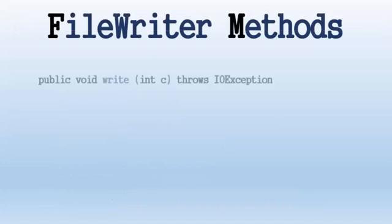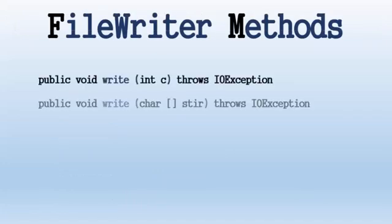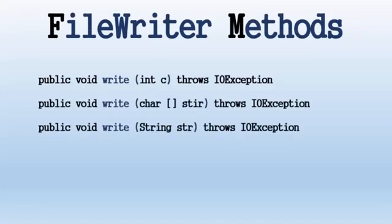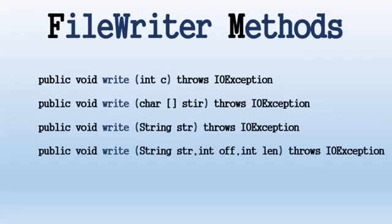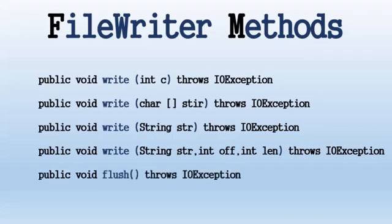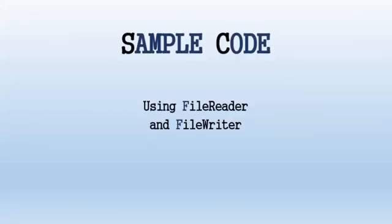FileWriter methods: this class has four write methods with different parameters. The first write method takes an int. The second takes an array of characters. The third takes a string. And the fourth takes a string and an int. The other two methods are flush and close. The following are demonstrations of the FileReader and FileWriter classes.